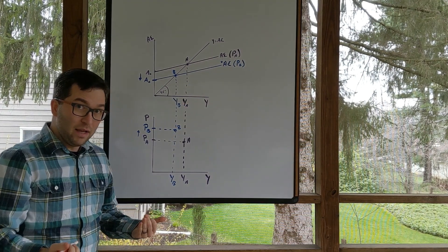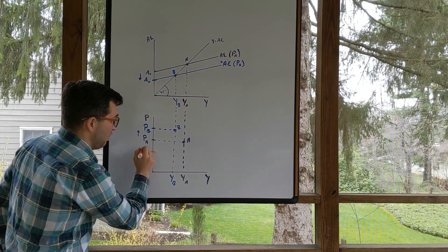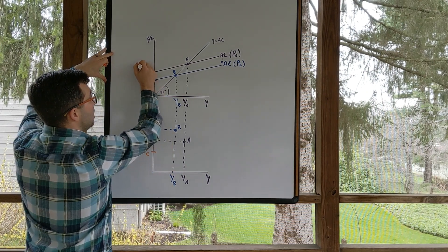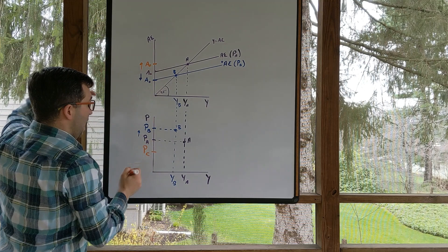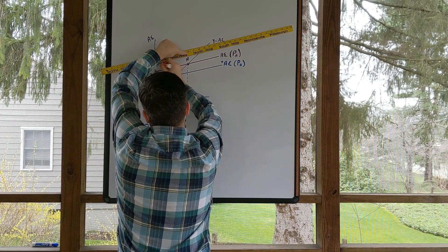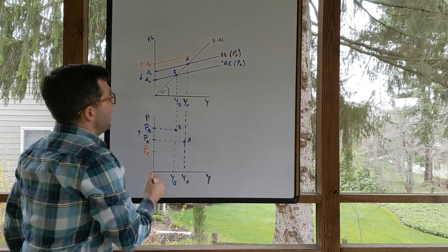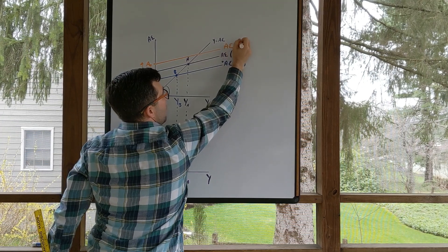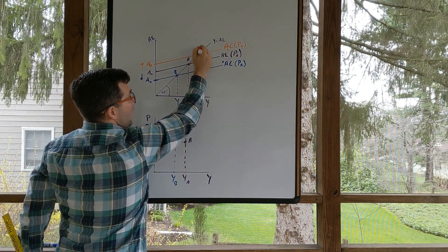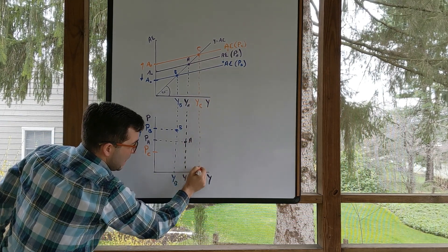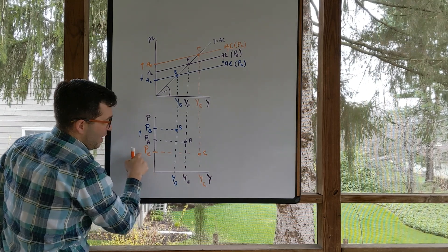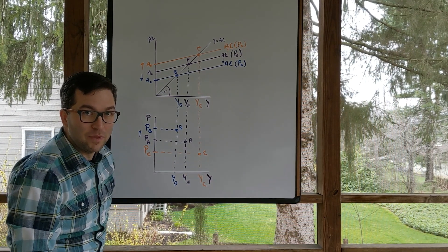We can do this another way by decreasing the price — P sub C. The same type of idea, only in reverse: a lower price is going to increase autonomous spending, up to here. An increase in autonomous spending will increase aggregate expenditure. Using the straight edge again to keep these as parallel as possible, this increase in autonomous spending will increase aggregate expenditure. This is the level of aggregate expenditure associated with price level C, and we get a new, higher level of equilibrium GDP.